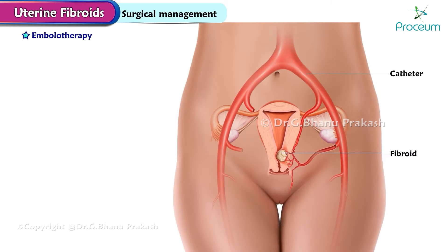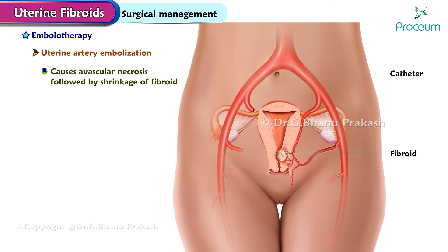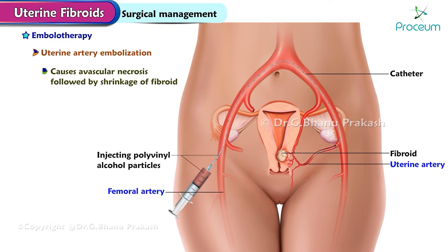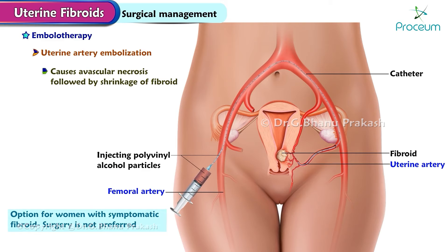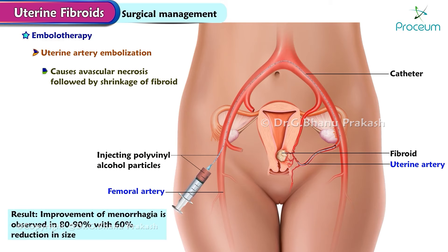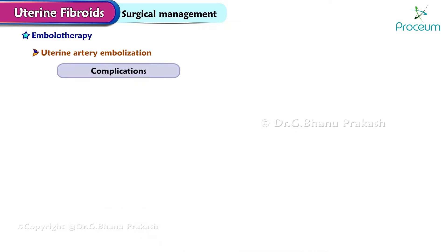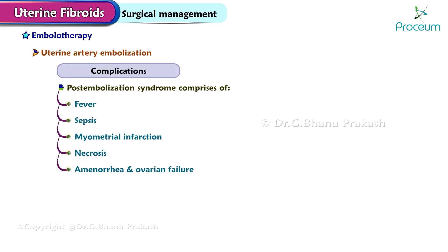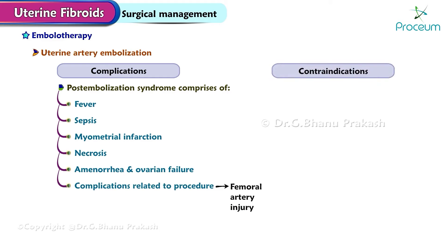Embolotherapy: uterine artery embolization causes avascular necrosis followed by shrinkage of the fibroid. Uterine arteries are occluded by injecting polyvinyl alcohol particles through percutaneous femoral catheterization. This may be an option for women with symptomatic fibroid where surgery is not preferred. Result: improvement of menorrhagia is observed in 80-90% with 60% reduction in size. Complications: post-embolization syndrome comprises fever, sepsis, myometrial infarction, and necrosis; amenorrhea and ovarian failure; and femoral artery injury. Contraindications: active pelvic infection, desire for future pregnancy, and drug allergy.